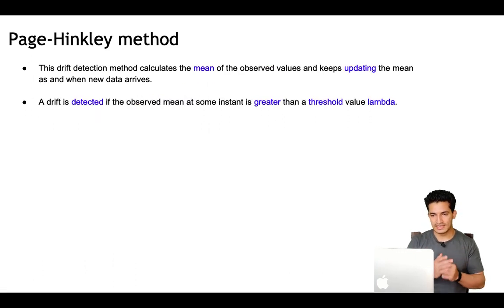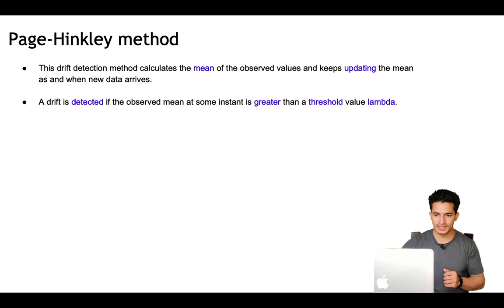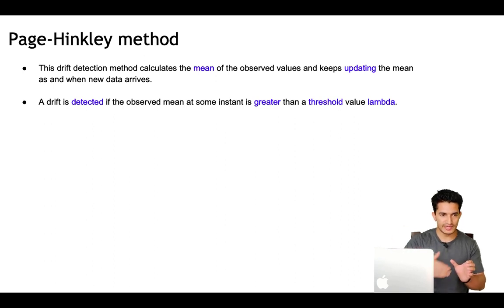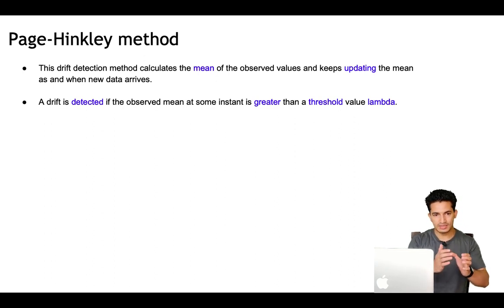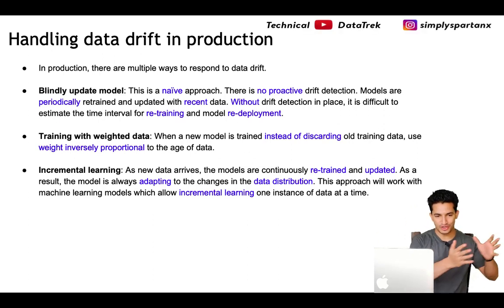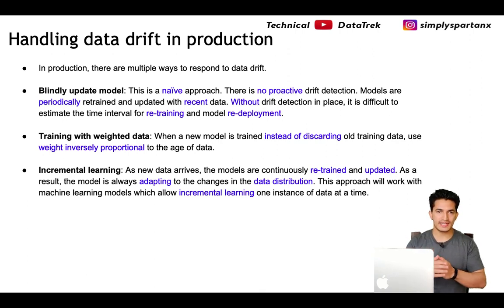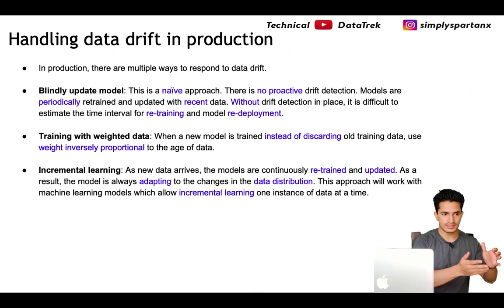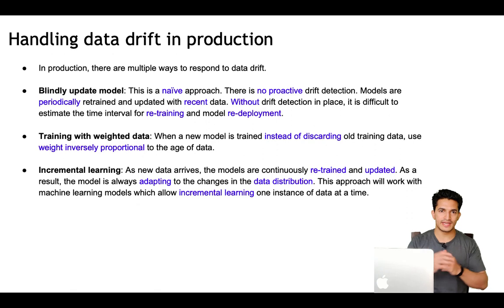Another method is the Page Hinkley method. The drift detection method calculates the mean of observed values and keeps updating the mean as new data arrives. A drift is detected if the observed mean at some instance is greater than the threshold value lambda. As soon as new data comes in, we recalculate the mean, and as soon as the change in mean exceeds the threshold lambda, a drift is detected. Looking at all these methods — some for numerical data, some for categorical, and some that transform categorical features into numerical buckets — we can detect both concept drift and covariate drift.